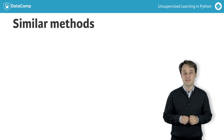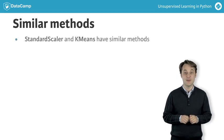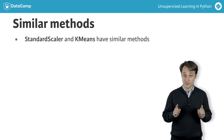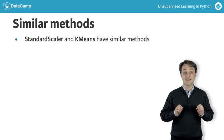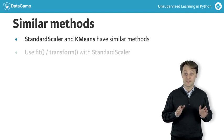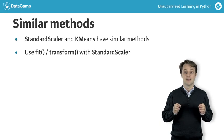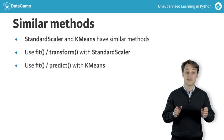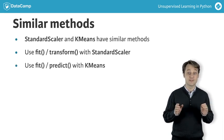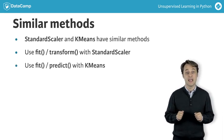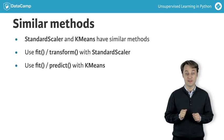The APIs of StandardScaler and K-means are similar, but there is an important difference. StandardScaler transforms the data, and so has a transform method. K-means, in contrast, assigns cluster labels to samples, and this is done using the predict method.